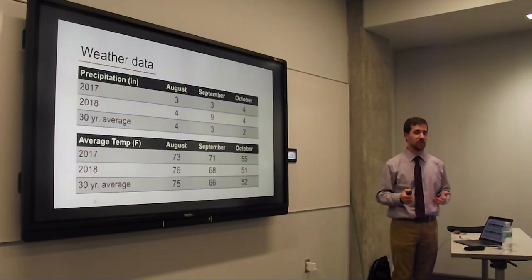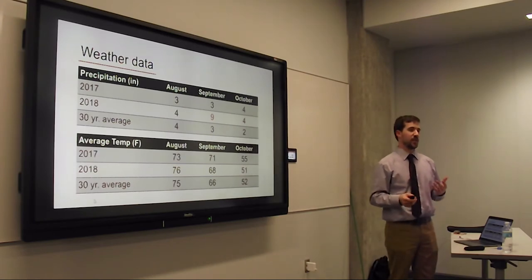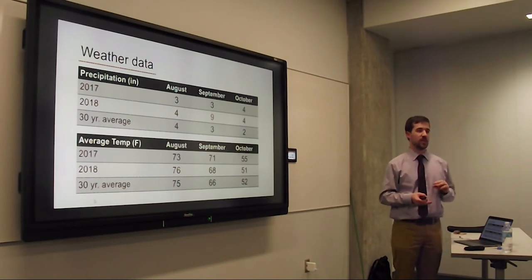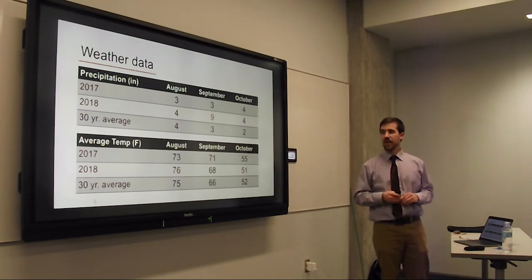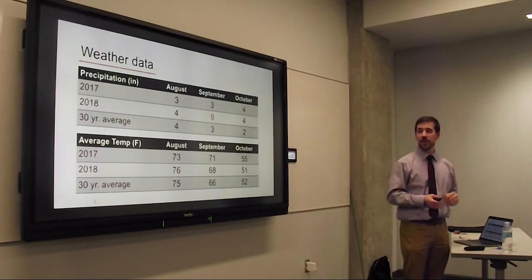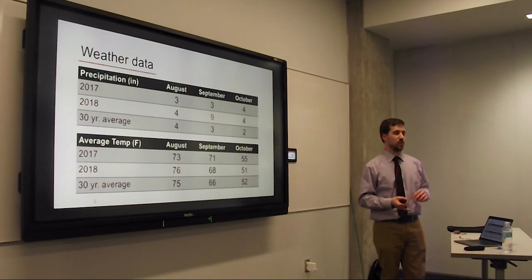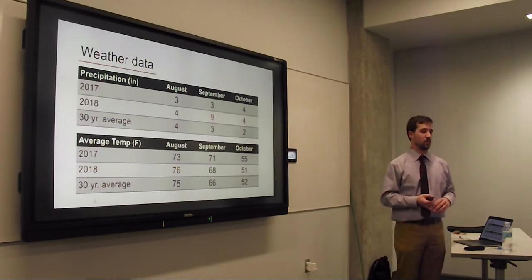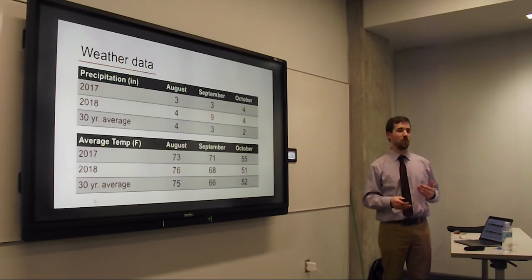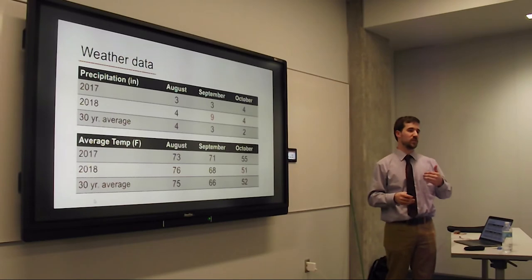The large difference in phomopsis between 2017 and 2018 comes down to weather. September 2018 had six more inches of rain than the 30-year average, with cycles of rain and warmth that created a favorable environment for the disease and also pushed harvest further into October.